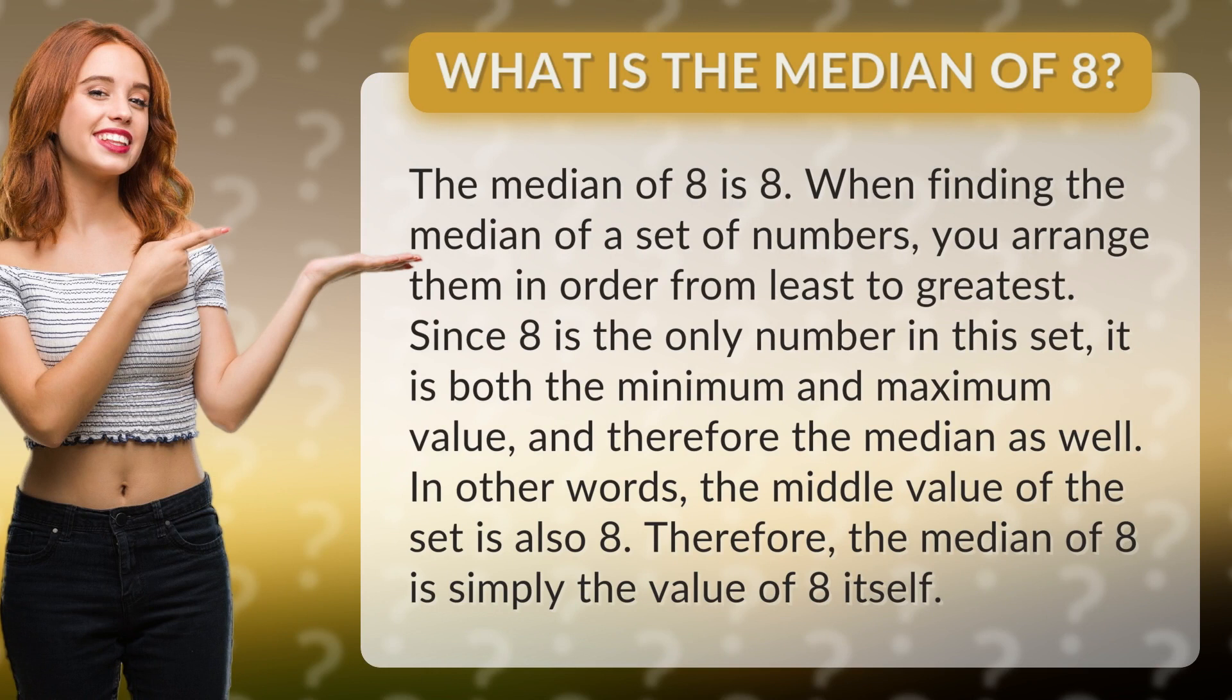When finding the median of a set of numbers, you arrange them in order from least to greatest. Since 8 is the only number in this set, it is both the minimum and maximum value, and therefore the median as well.